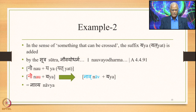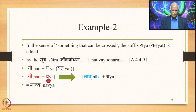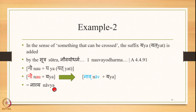Similarly, the second example: in the sense of something that can be crossed, the suffix Ya — originally stated as Yat with the marker Ta — is added to the word Nau, ending in Au, by the sutra Nauvayodharmadi 4.4.91. So we have Nau followed by Ya. Au is immediately followed by a Pratyaya beginning with consonant Ya, so 6.1.79 applies and the output generated is Nav plus Ya, which together becomes Navya — meaning something that can be crossed by a ship, such as a river.